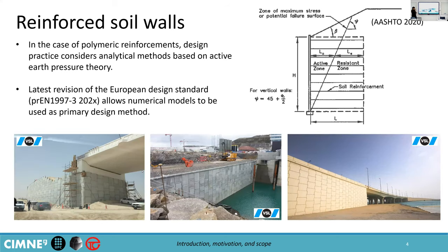These types of structures are commonly used as geotechnical solutions, and you can probably recognize these geometries from the first and third pictures, which are commonly implied as bridge abutments or as highway overpasses. There are also other applications in the mining industry or port industry, in which the wall can be, for example, partially submerged.